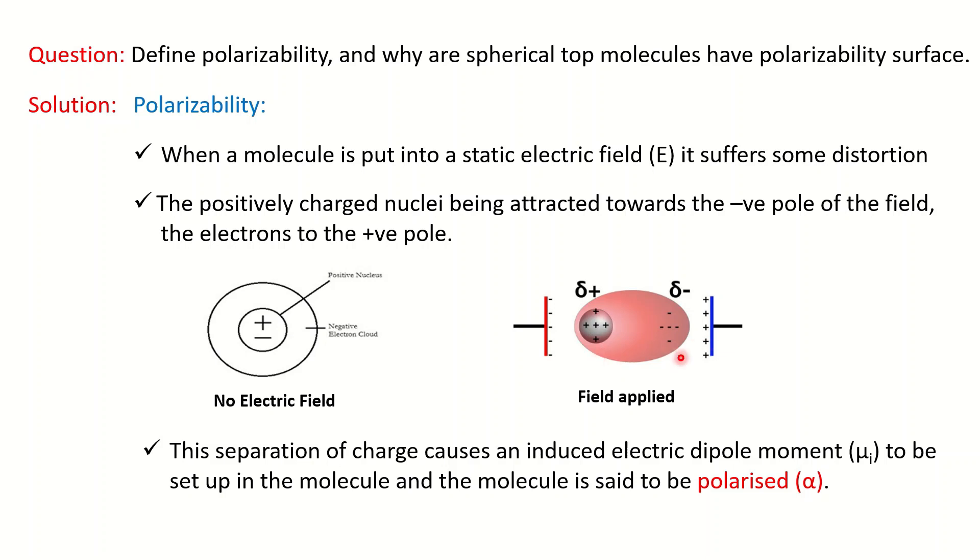The separation of charges causes an induced dipole moment. The dipole moment has been induced, represented by μi here, and the molecule is said to be polarized. The formula is μi = αE, where μi is the induced dipole moment, α is the polarizability, and E is the electric field.